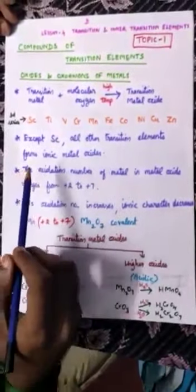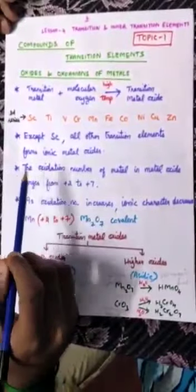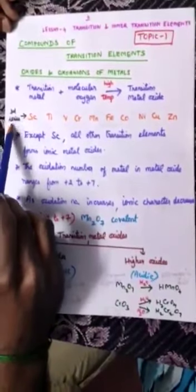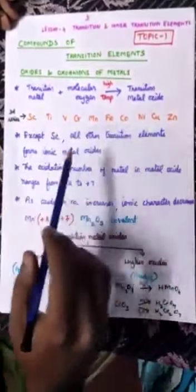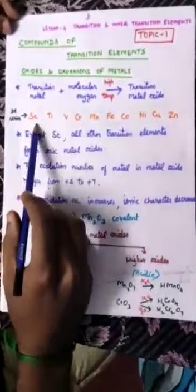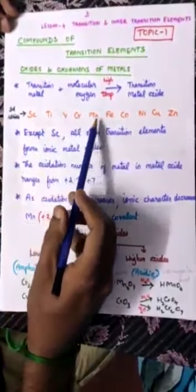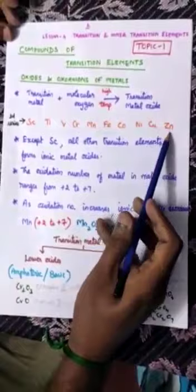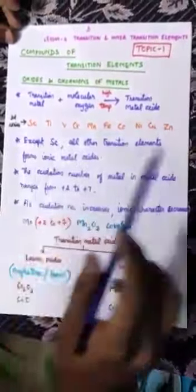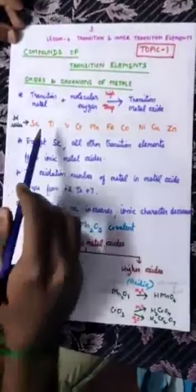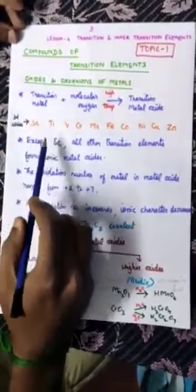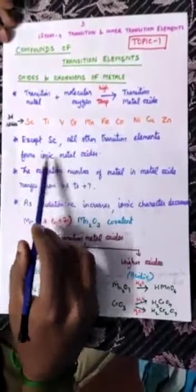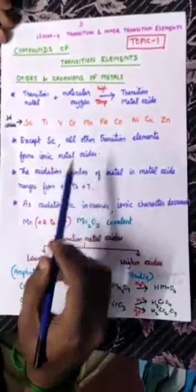Nearly 40 elements are there in our transition metal series, of which I have taken the first series called the 3D series. Here we have 10 elements: Scandium, Titanium, Vanadium, Chromium, Manganese, Iron, Cobalt, Nickel, Copper, and Zinc. The first element, Scandium, is excepted — all the other elements form ionic metal oxides.